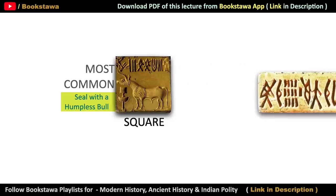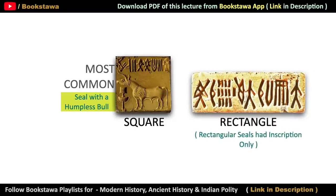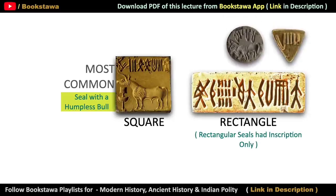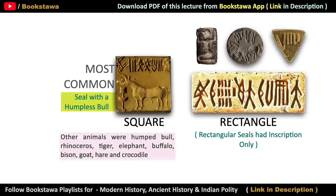The most common shape in seals is square, but seals are also found in many other shapes like rectangular. On rectangular seals there are only inscriptions — no motif. Apart from this, triangular, circular and cylindrical shaped seals have also been found. The most common seals of the Indus Valley Civilization are square-shaped humpless bull, that is, unicorn seals.